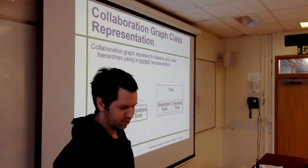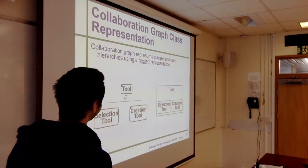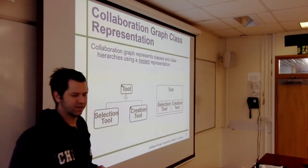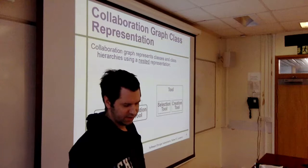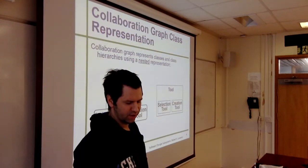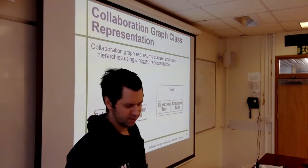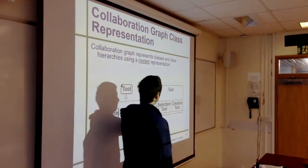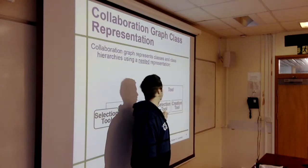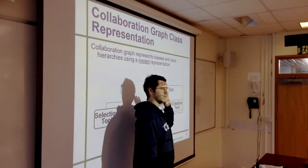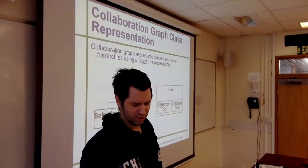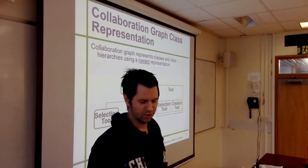A full collaboration graph includes classes and their hierarchies, interfaces, and collaborations. A collaboration graph represents classes and class hierarchies using a nested representation. So this is a class hierarchy — we have a Tool, which is an abstract class, and we have child classes called CreationTool and SelectionTool. That can also be represented in a nested way, kind of like a Venn diagram. The interpretation is: a SelectionTool is a kind of Tool, and a CreationTool is a kind of Tool.